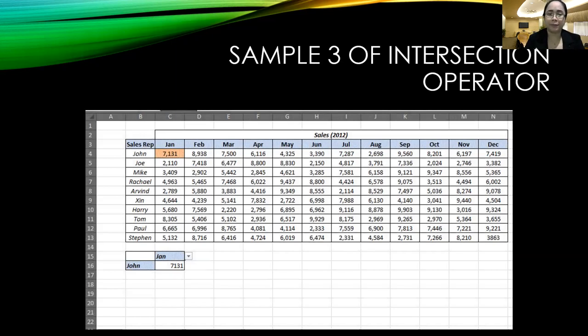Now sample number 3 shows a column for sales rep. We have John, Joe, Mike, Rachel, Arvind, Zinn, Harry, Tom, Paul, and Steven. And we have the months from January to December. Now looking at the intersection of the sales rep names and the names of the month, we could extract the intersection of both rows and columns. Rows for the sales rep and columns for the month.